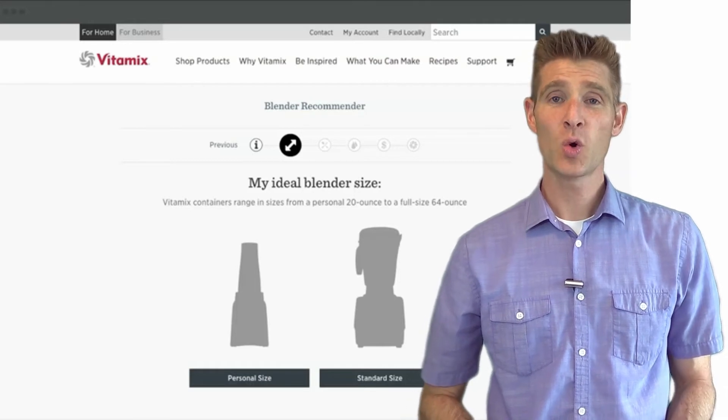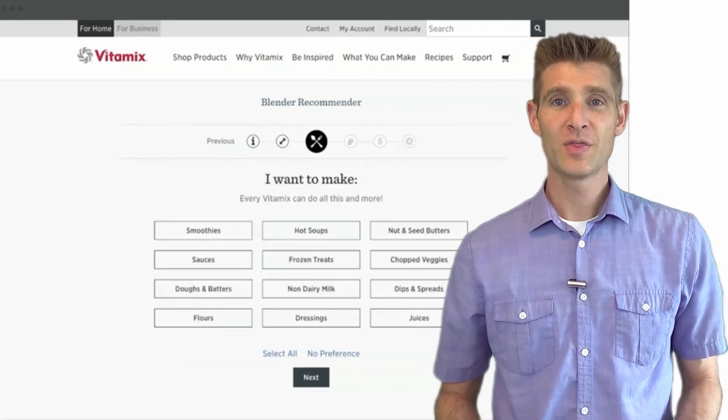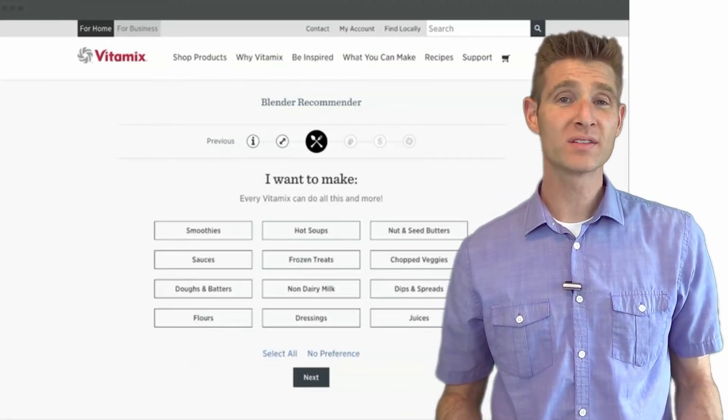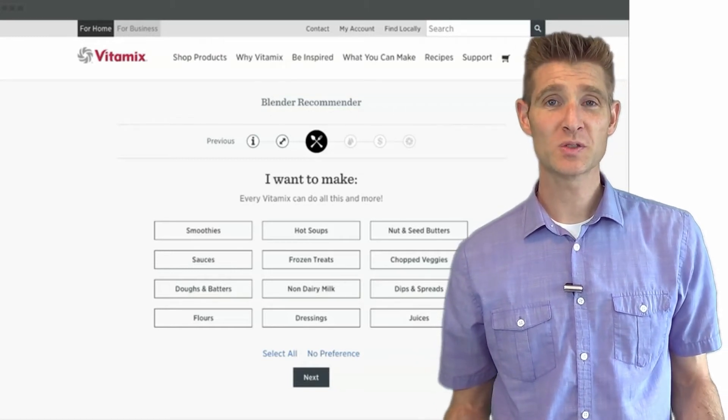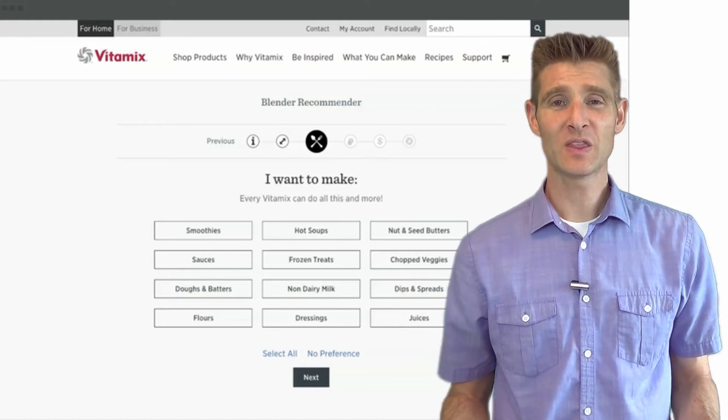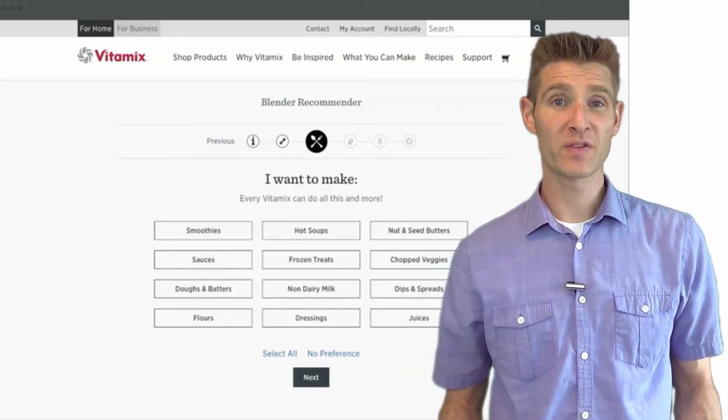The first question they asked was are you interested in a standard size or more of a personal size? They then asked the visitor what they want to make with their blender. Soups or smoothies or flours? Do you want to make juices or dressings? They had all these things the visitor could select to find the perfect blender for them.